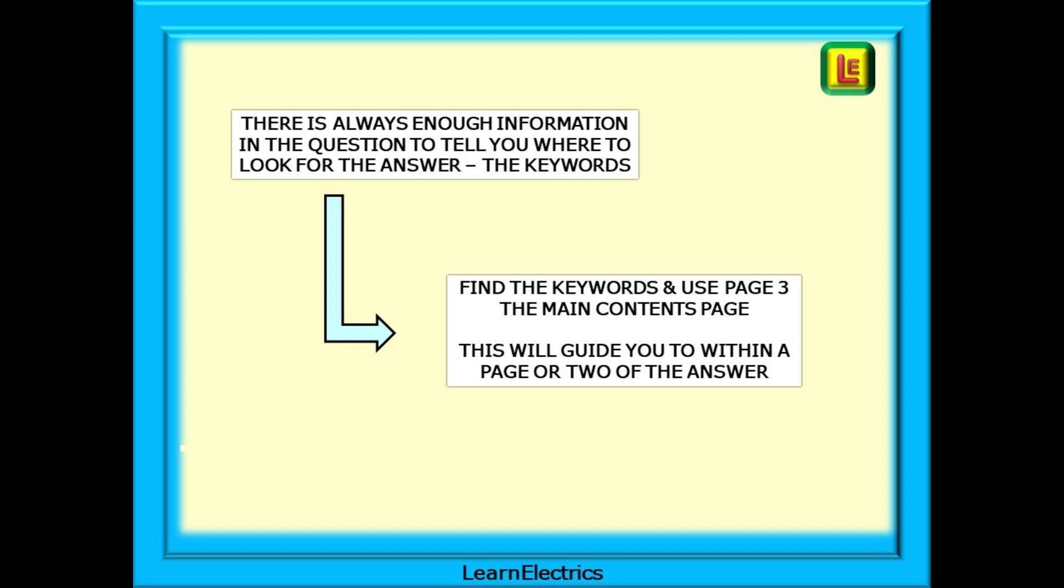A little summary then. There is always enough information in the question to tell you where to look for the answer. These are the key words, the words that will help you to find the right part of the book. Find the key words and use page 3, the main contents page. Used correctly, the key words and page 3 will guide you to within a page or two of the answer.